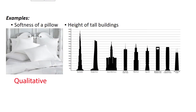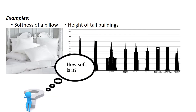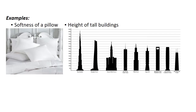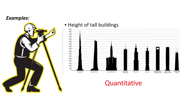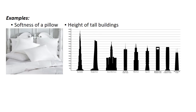Let's consider two examples. The softness of a pillow — that's kind of an opinion, so that is qualitative data. How about if we measure the height of various tall buildings? As long as we've measured correctly, that's quantitative data.